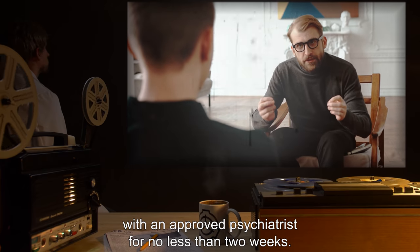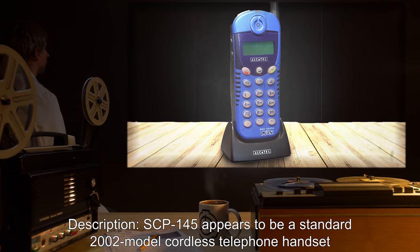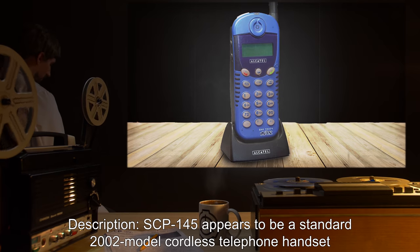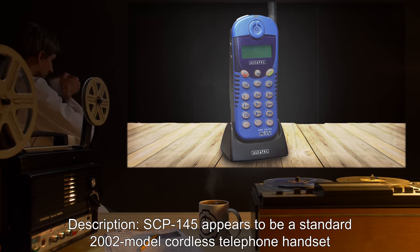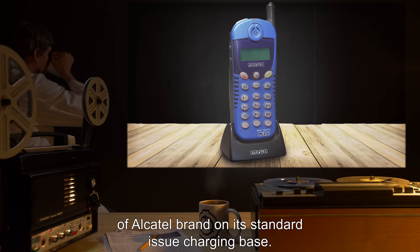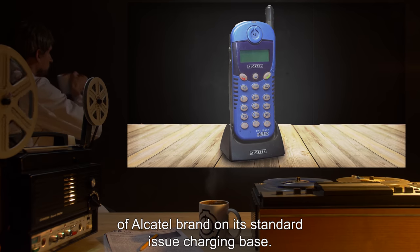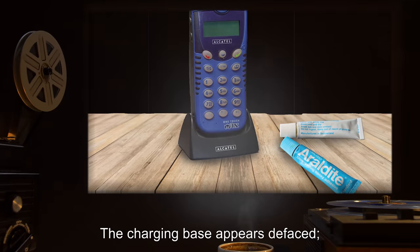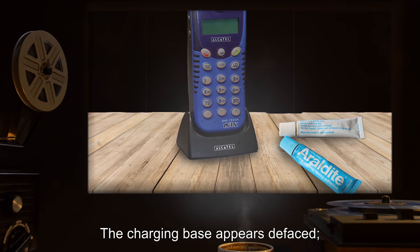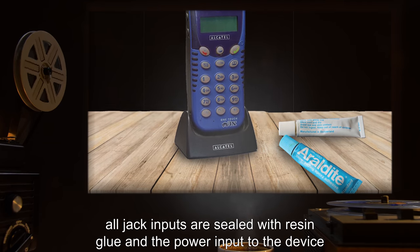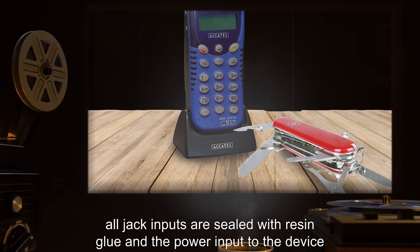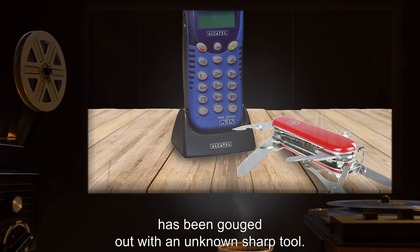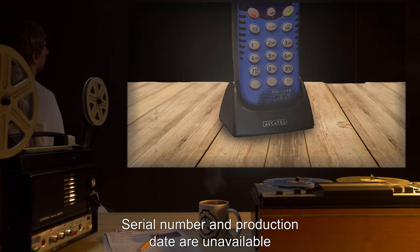Description: SCP-145 appears to be a standard 2002 model cordless telephone handset of Alcatel brand on its standard issue charging base. The charging base appears defaced. All jack inputs are sealed with resin glue and the power input to the device has been gouged out with an unknown sharp tool. Serial number and production date are unavailable as all labels and stickers have been ripped off or defaced.